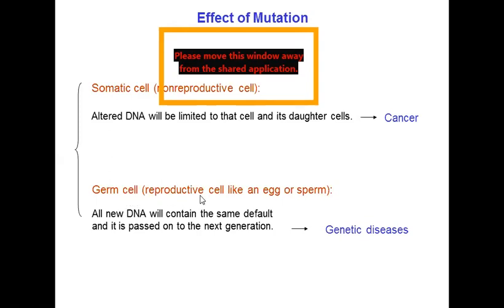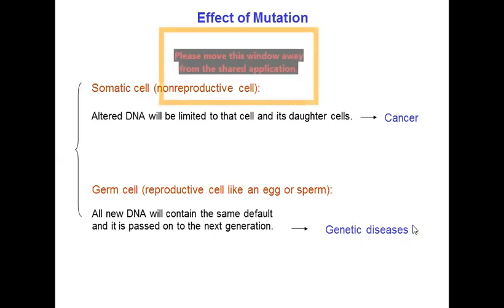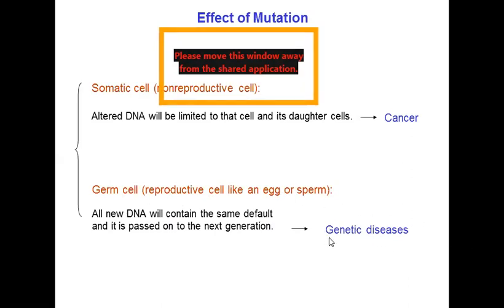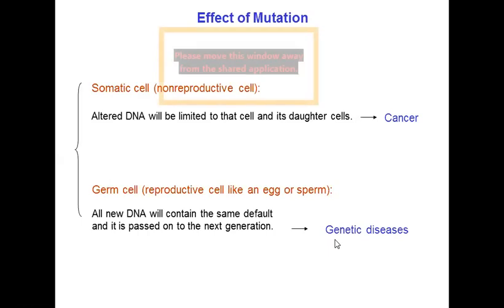Germ cells are reproductive cells like egg or sperm. If the new DNA contains the same defect, it will pass to the next generation. That's what a genetic disease is — it gets passed on. This is why sexual reproduction should be more diverse in partners. If both partners carry the same genetic disease for a certain gene, that mutation will be enhanced in the family.